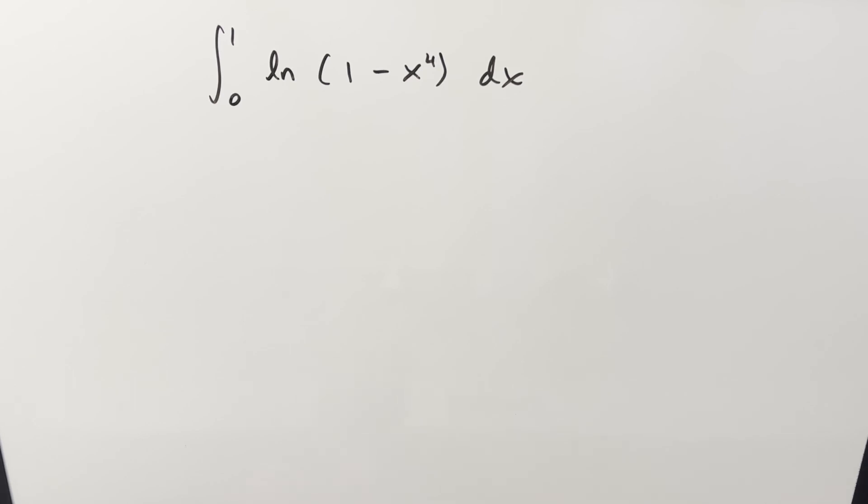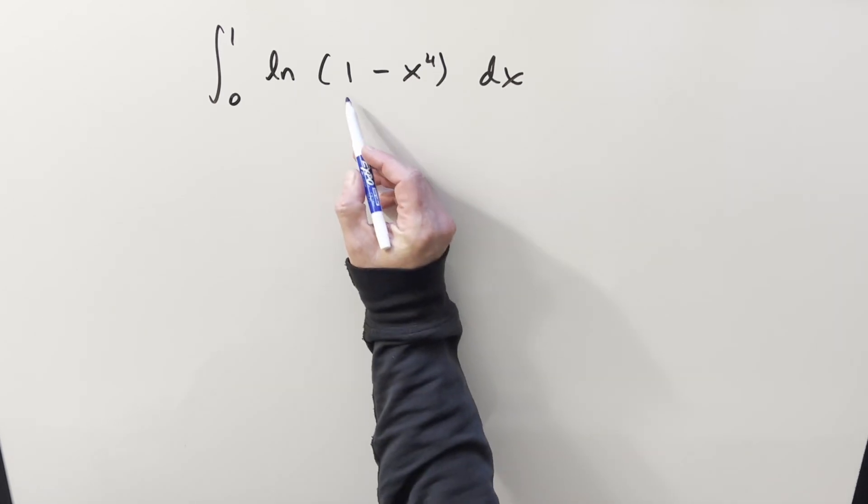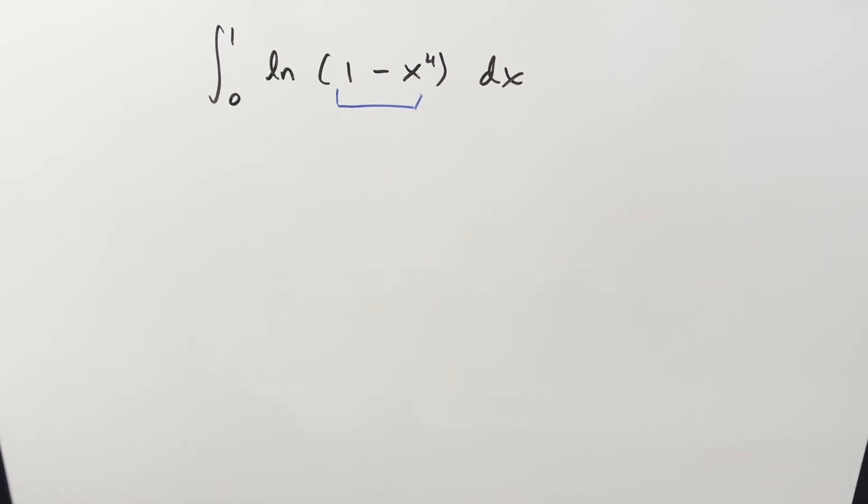And why do I say it's annoying? It's just the one minus x to the fourth. Now when we have natural log, typically we're going to want to use integration by parts on it, or that's kind of the first thing I think of.